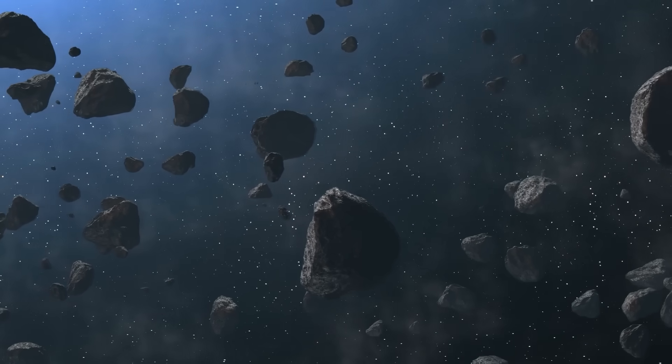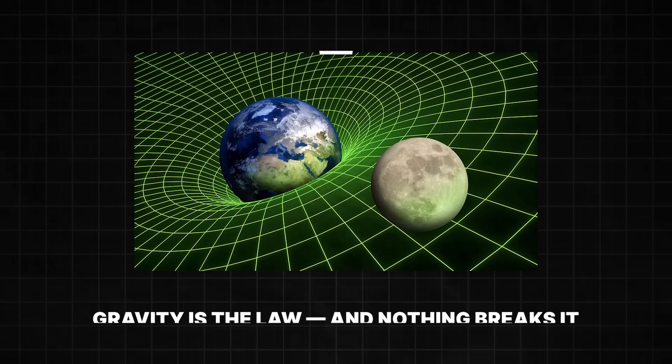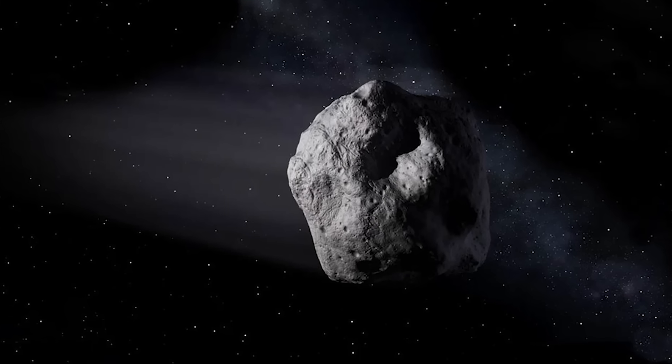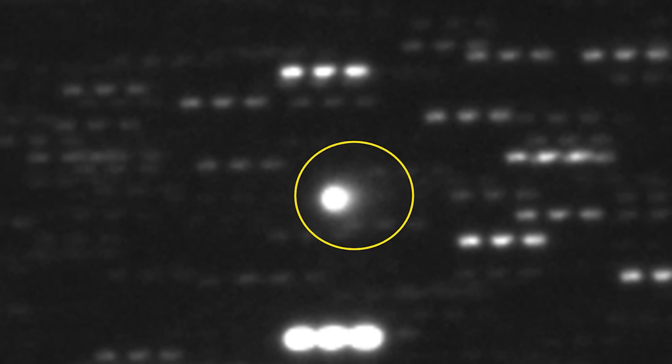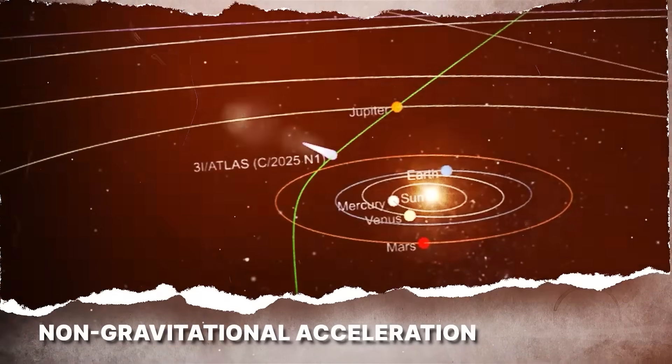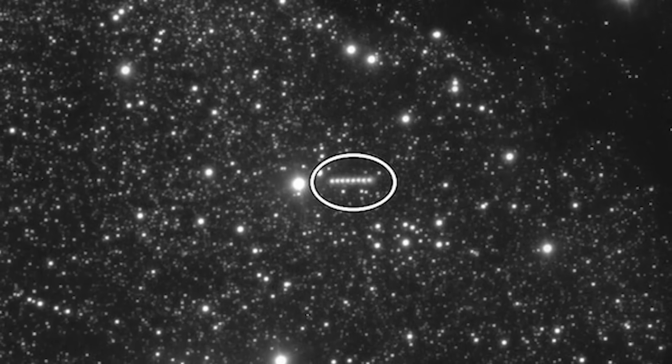The thing nobody tells you is that objects in space follow very, very strict rules. Gravity is the law, and nothing breaks it. A comet can't just decide to speed up or change course on its own. Yet, that's exactly what 3i Atlas did. It exhibited what scientists call non-gravitational acceleration. In simple terms, it was being pushed by an unseen force.